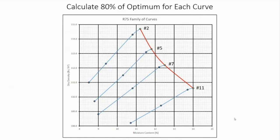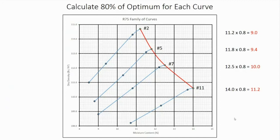Now we calculate 80% of optimum moisture for each curve. For curve 2, optimum moisture is 11.2, multiplied by 0.8 gives 9.0%. For curve 5, optimum moisture is 11.8, multiplied by 0.8 gives 9.4%. For curve 7, optimum moisture is 12.5, multiplied by 0.8 gives 10.0%. For curve 11, optimum moisture is 14.0, multiplied by 0.8 gives 11.2%.